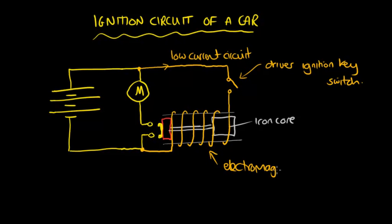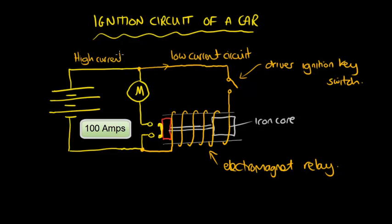This is an electromagnet relay. The electromagnet creates a magnetic field which pulls the iron core into it, and in doing so will connect up the starter motor circuit, which is a high current circuit.